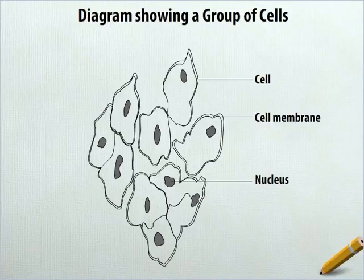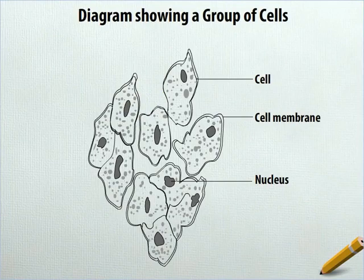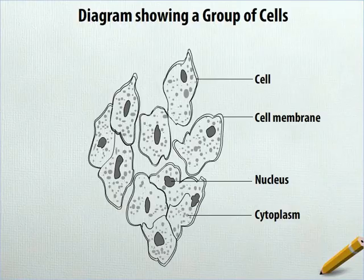Inside each cell draw scattered dots like this. Label the interior space of one of the cells as cytoplasm and you are done.